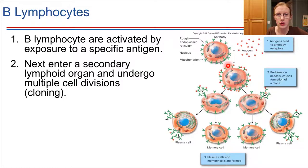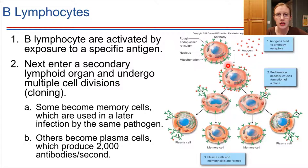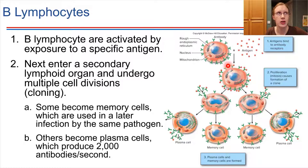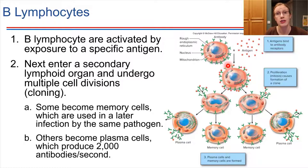Those clones can do one of two things. Some of them will become what are called memory cells. Memory cells don't really actively produce antibodies. Rather, they hang out and literally provide a long-term immunological memory for our bodies, so that if we are exposed to this particular pathogenic antigen again in the future, those memory cells recall and help to ramp up production very quickly.